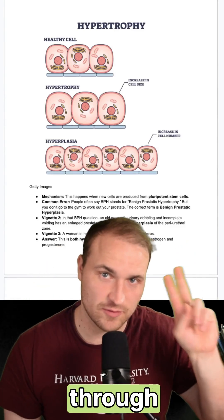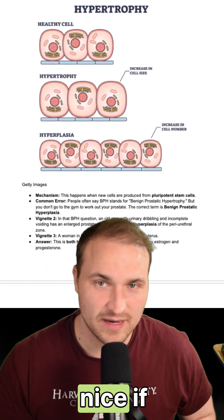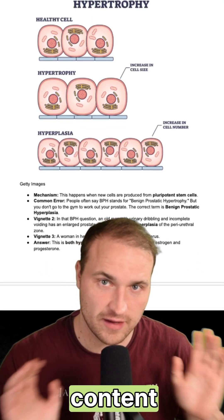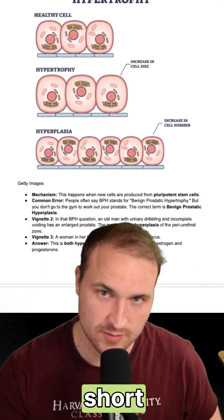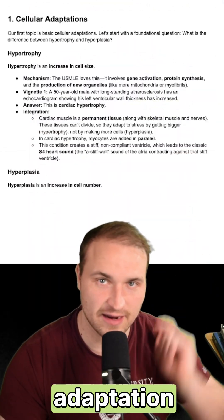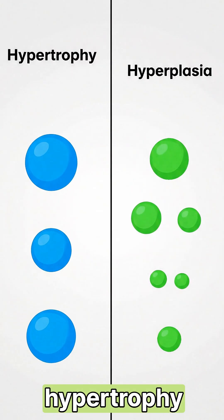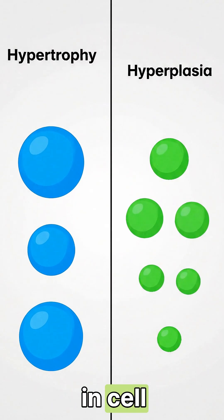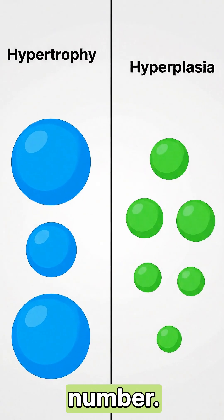You need to know pathology chapters 1 through 3. Wouldn't it be nice if you could cover all of that content in one YouTube short? That's what we're going to do right now. Cellular adaptation: Hypertrophy is an increase in cell size, not number.